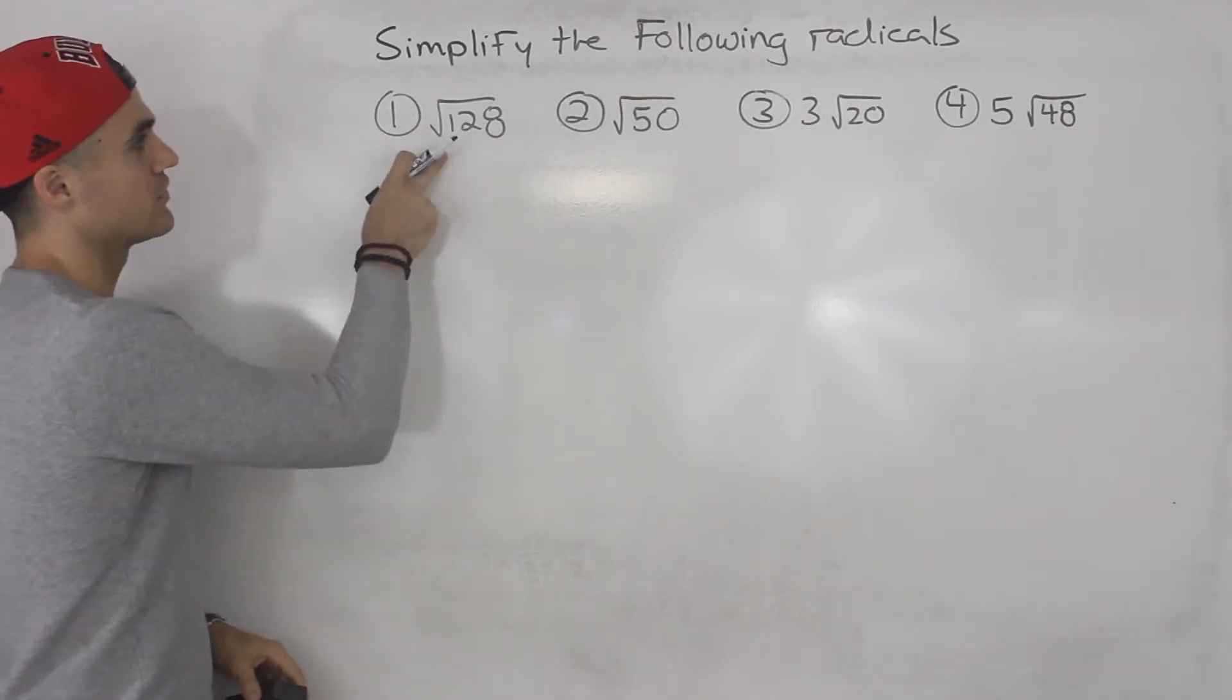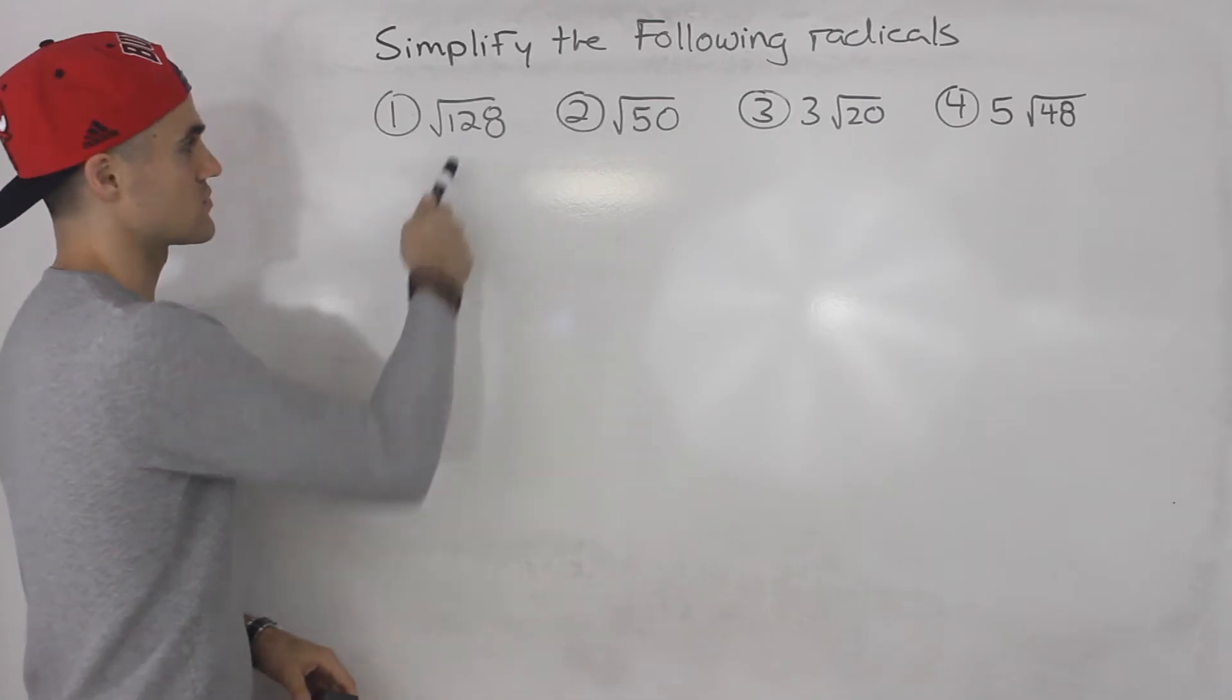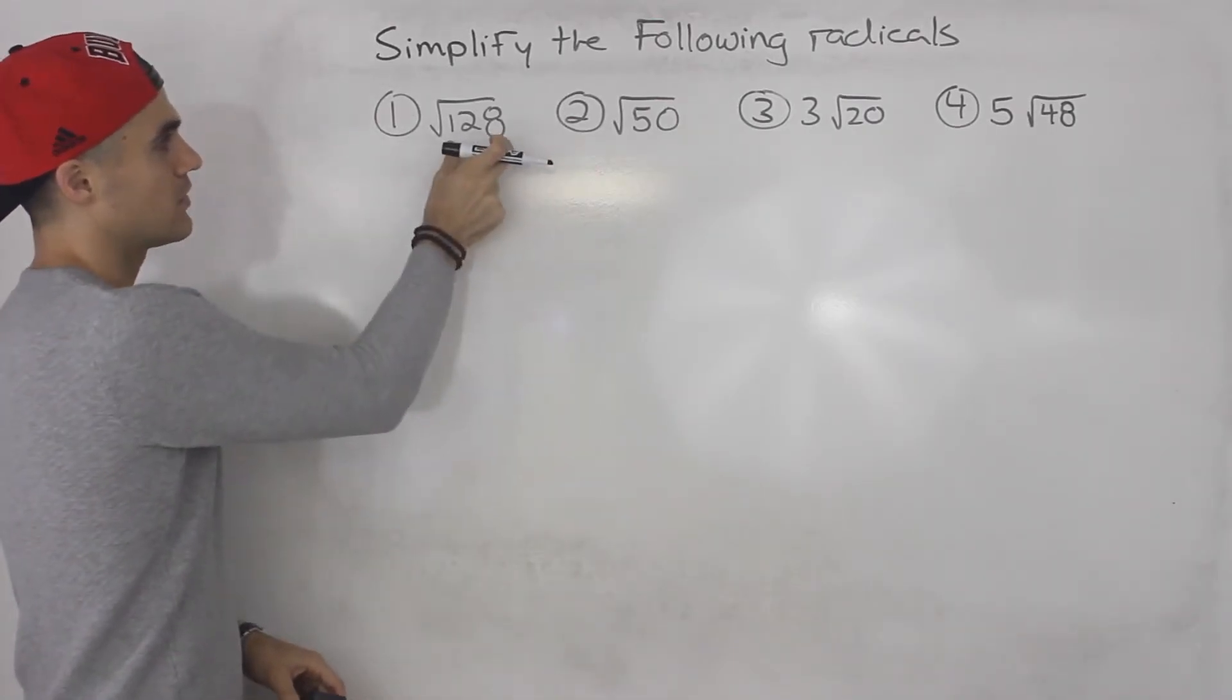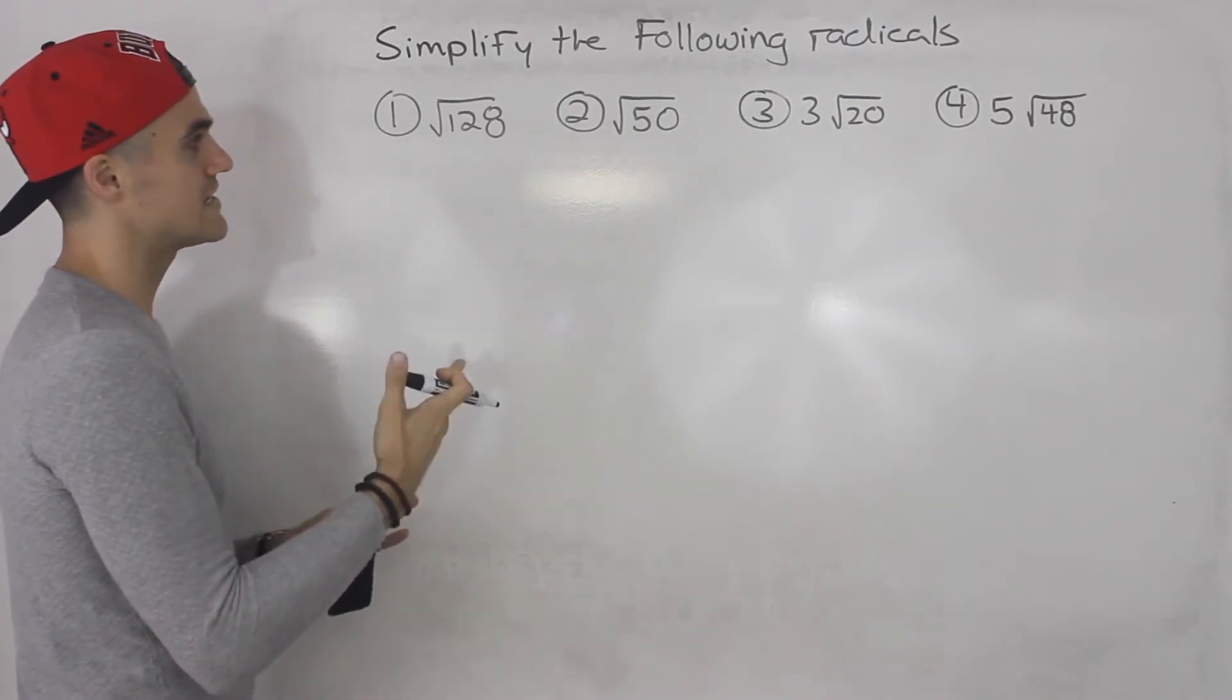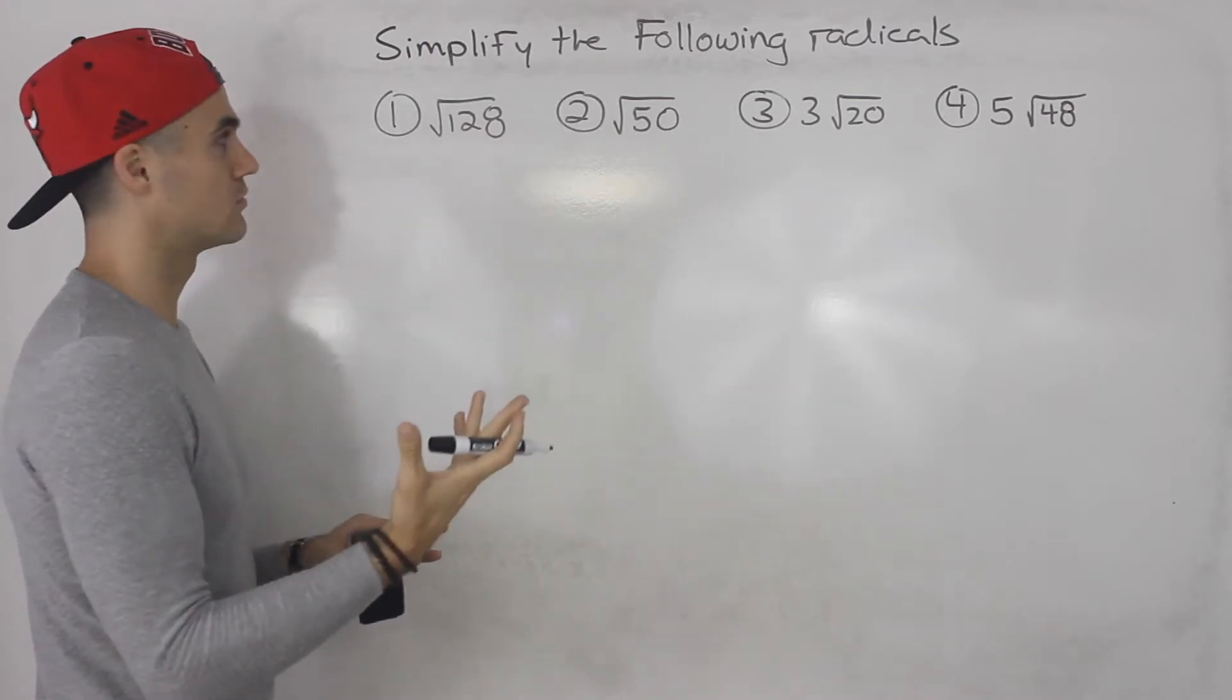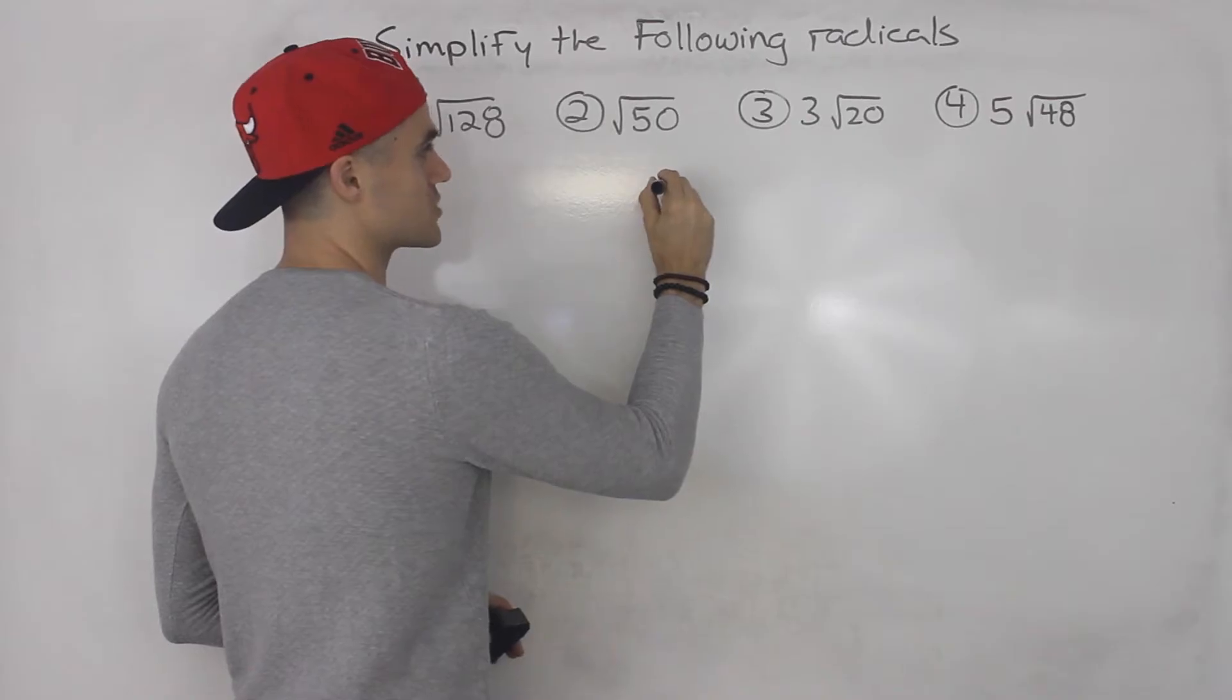So starting off with number one, we got root 128. How do we simplify this radical here? Well, what you want to do is you want to take the number that's inside the radical and try to see what number that is a smooth square root divides into it. So what are some smooth numbers that can be square rooted?